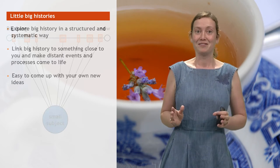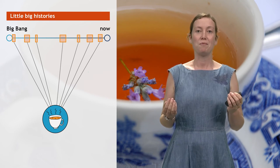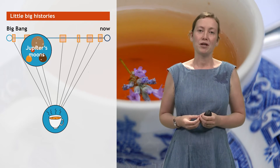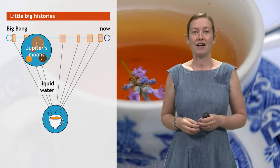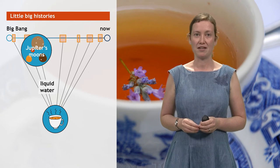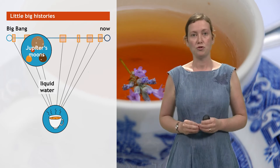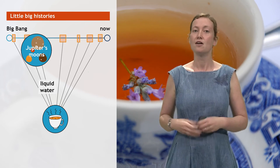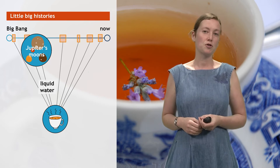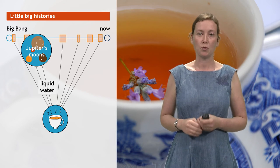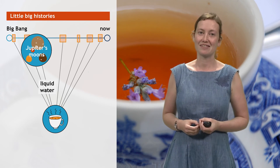For example, when thinking about a connection between the cup of tea and Jupiter's moon Europa, you may find that both partly consist of liquid water. You may also find that liquid water cannot exist in many places in our solar system, besides Europa, Earth, and a few other bodies. So why do you think that is the case? In other words, what special conditions on Earth and in Europa allow for cups of tea to exist in these places?